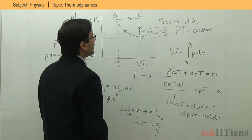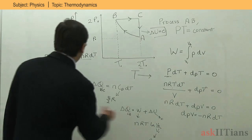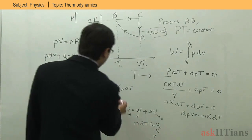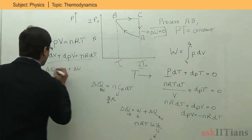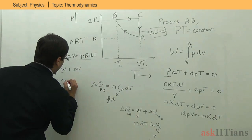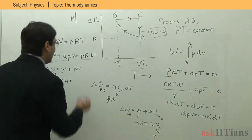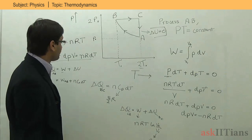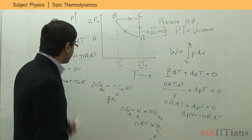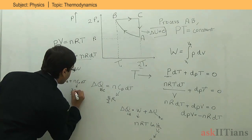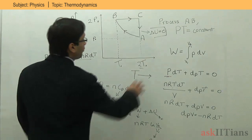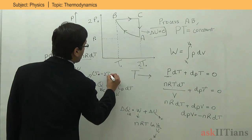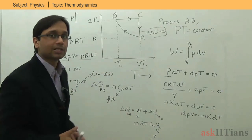For process A to B, to find the heat exchange we apply the first law of thermodynamics: ΔQ = W + ΔU. The work done for A to B has already been found. ΔU = nCvΔT, where for a monoatomic gas Cv = 3/2 R. The temperature changes from 2T₀ to T₀, so ΔT = T₀ − 2T₀ = −T₀. Substituting these values gives the heat exchange for process A to B.